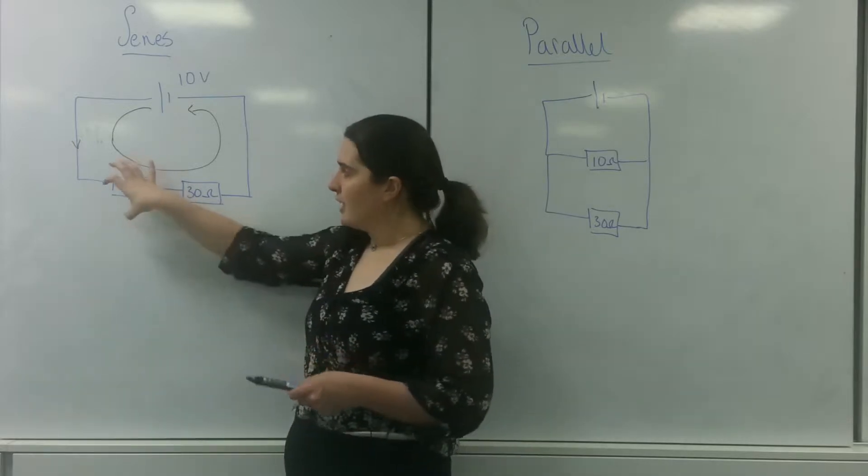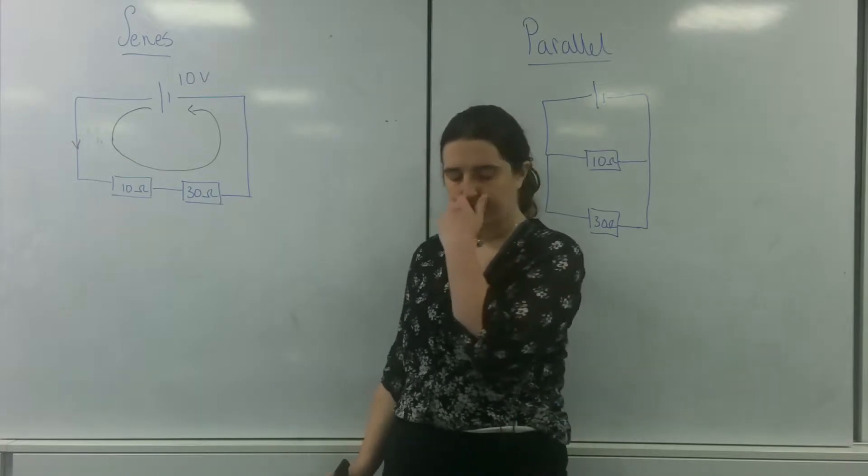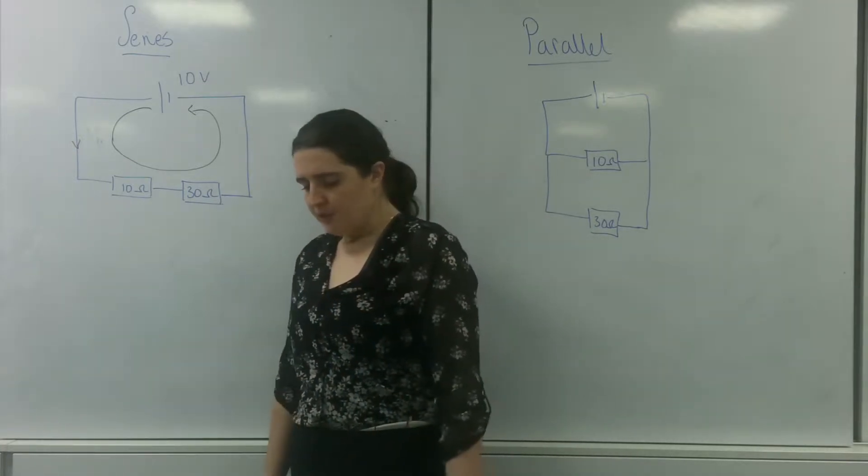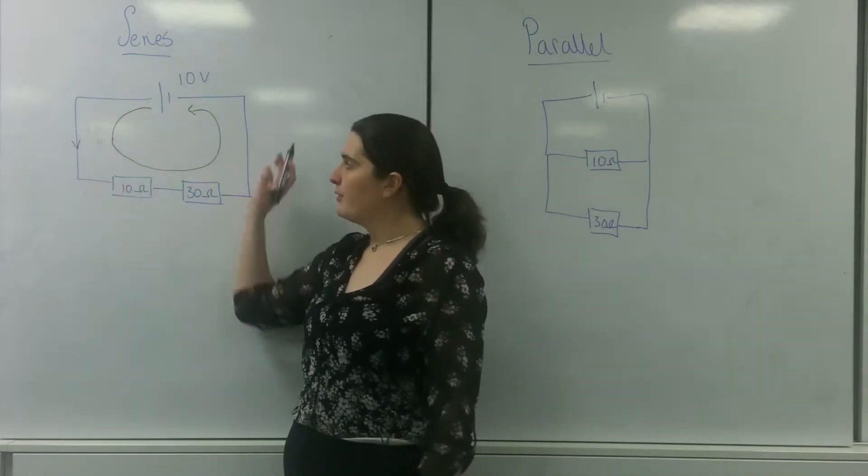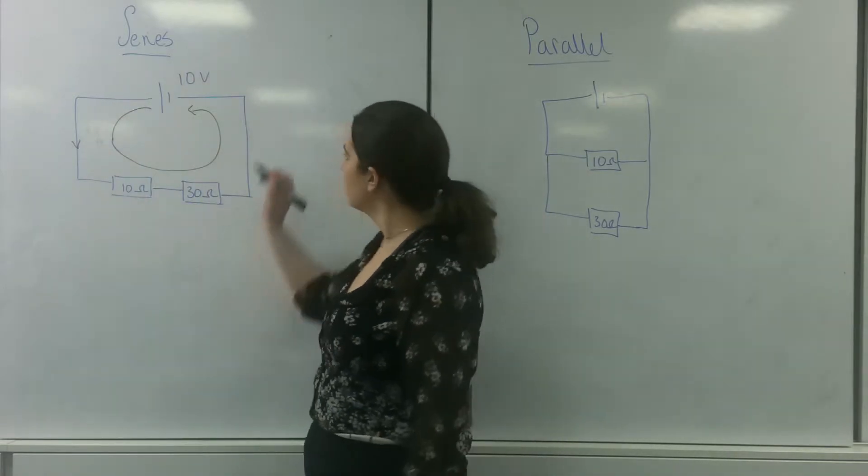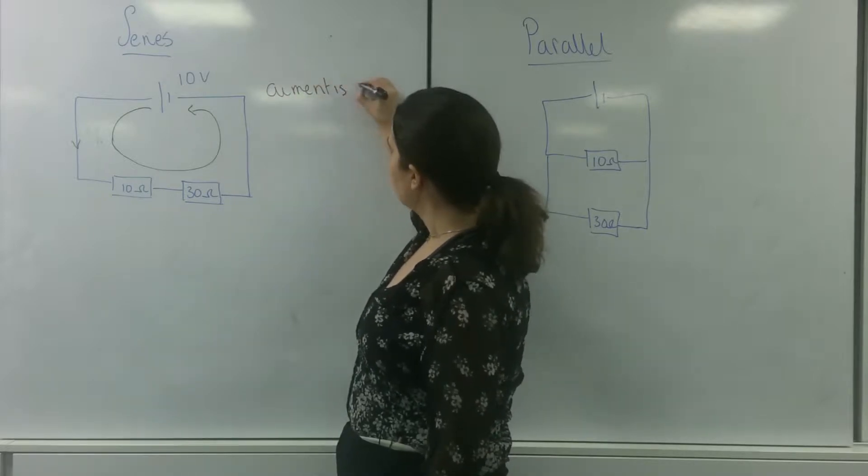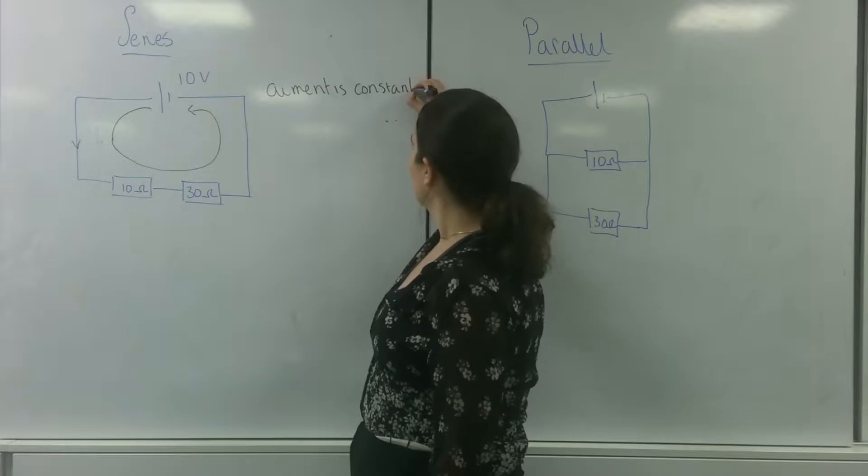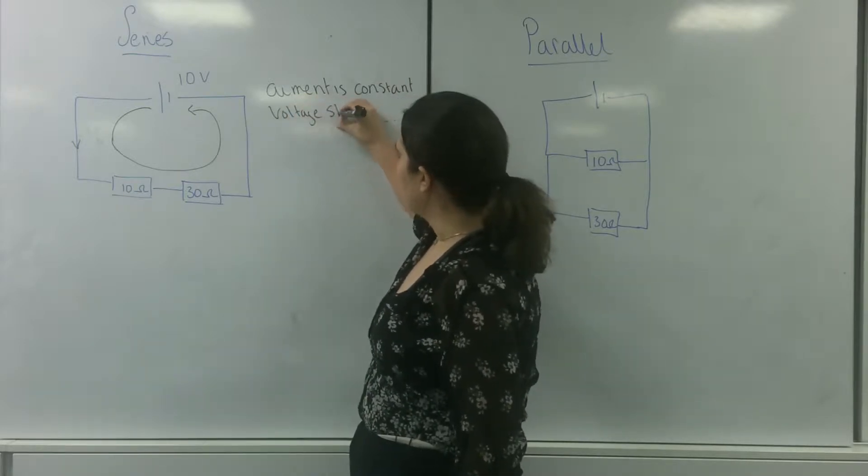So I know each of these is going to have an individual amount but to work that out I'm going to need to have the current going through them. So this is a series circuit. The current that flows around this is the same. So the current is constant. It is voltage that is shared.